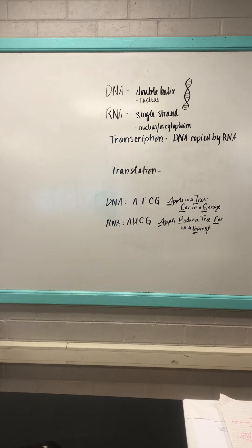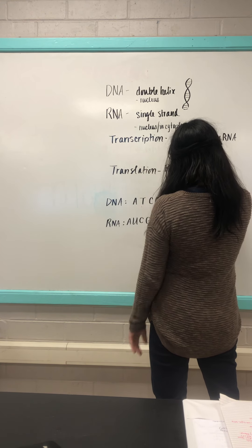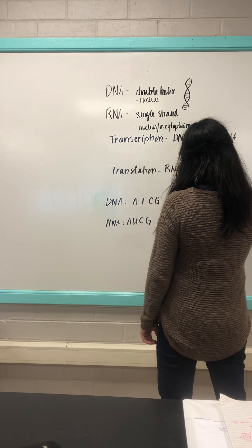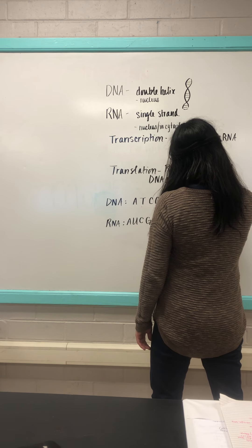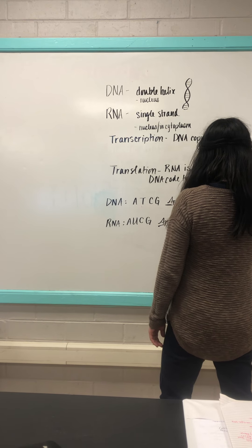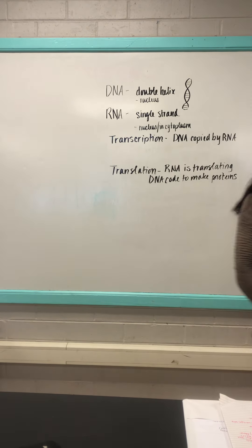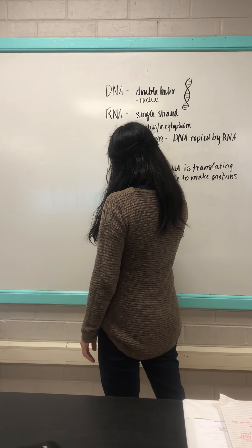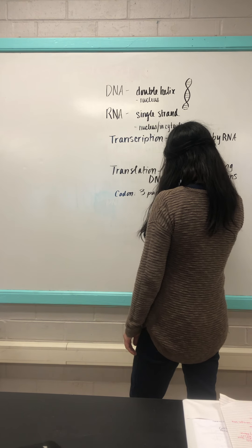Translation is where RNA translates the DNA code to make proteins. Proteins make up everything, so whatever needs to be made in the cell, the proteins are made for it. Codons are a three-part sequence of nitrogen bases, and we'll look at codon charts to identify what each codon produces.